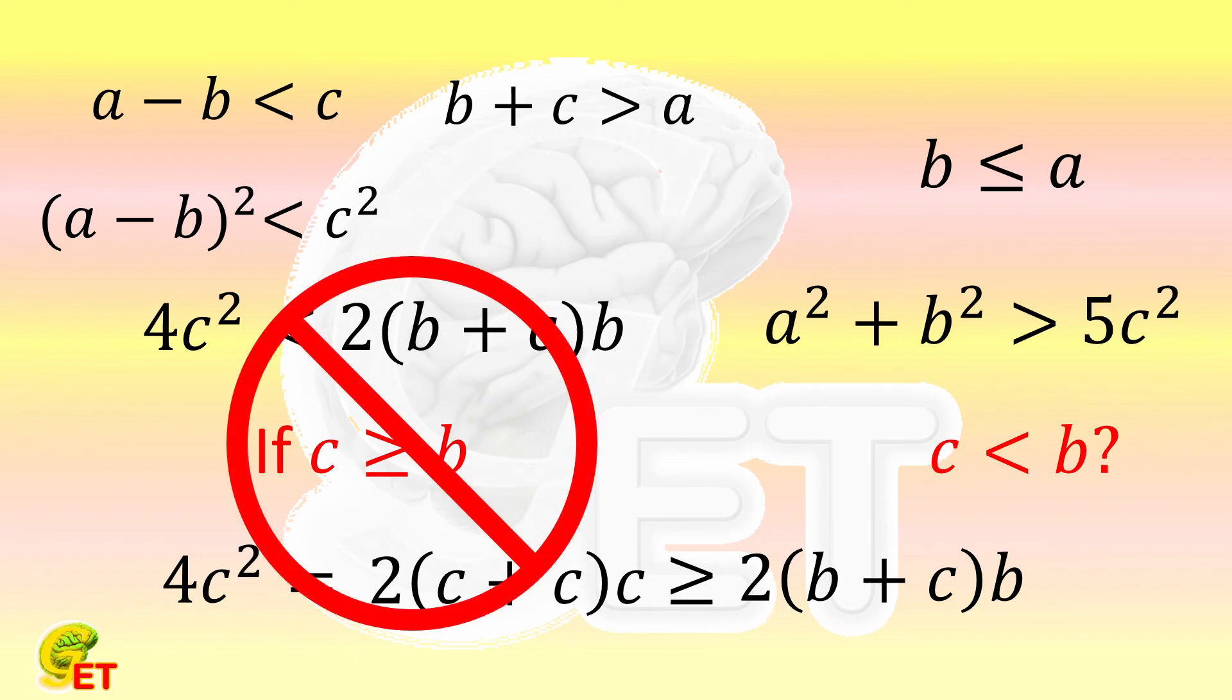The assumption is therefore false, and c must be smaller than b, which means that c is indeed the shortest side.